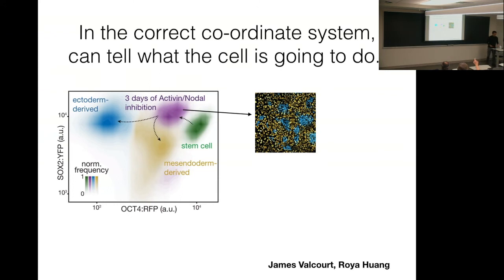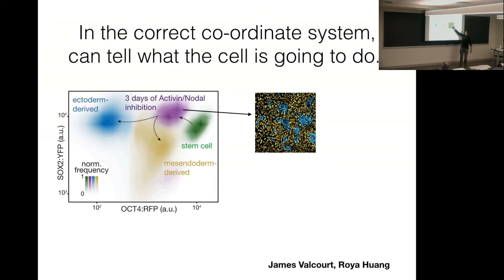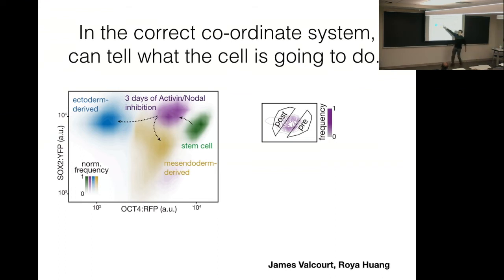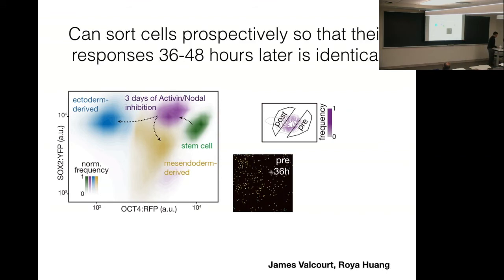It turns out we can precisely sort this. If I take the yellow cloud and purple cloud and add signal, this is the reference image. We can take this purple cloud and break it into two pieces — pre and post. Take the pre-cells, the ones that when I add signal will still turn yellow, add signal, wait two days — all yellow. Take the post-cells, add signal — all blue. So right here, drawing a line and separating them, I can tell you what's different between these two populations and predict before adding signal what they're going to look like.